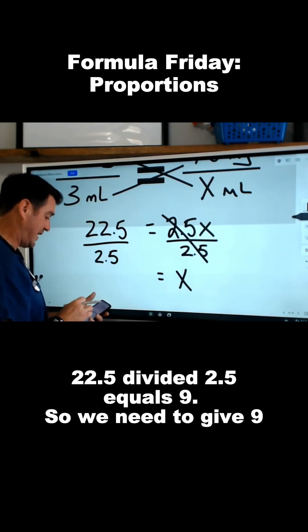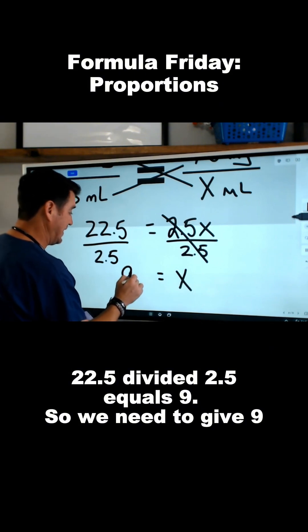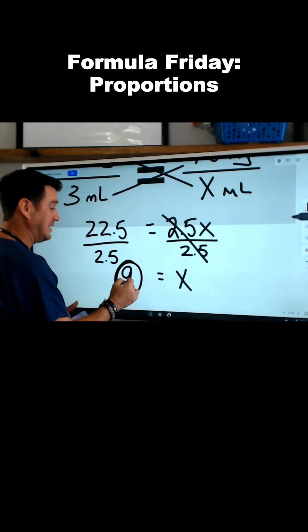22.5 divided by 2.5 equals 9. So we need to give 9. x equals 9.